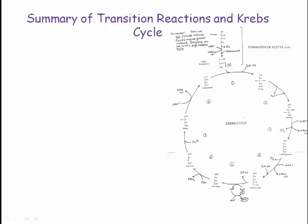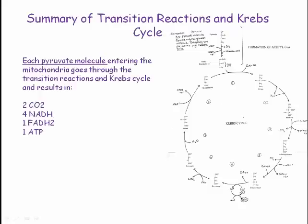In summary, we can take a look at the transition reactions and Krebs cycle. Each pyruvate molecule entering the mitochondria goes through the transition reactions and Krebs cycle, and it results in two carbon dioxide molecules, four NADH, one FADH2, and one ATP.